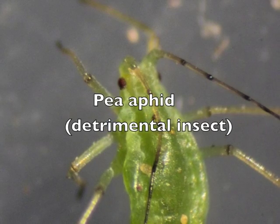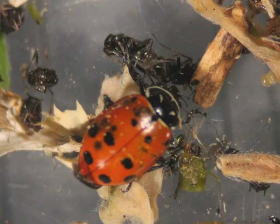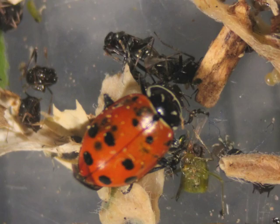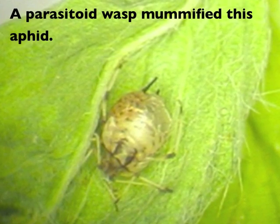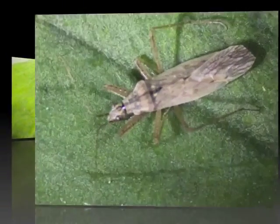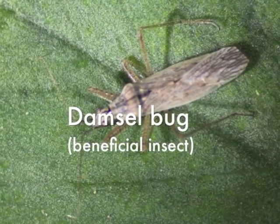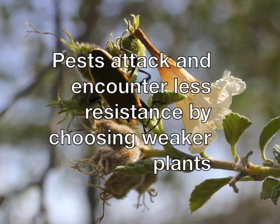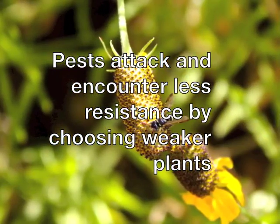There has to be a certain population of aphids to induce a ladybug to lay eggs. So when you get to a tipping point and there are suddenly too many aphids, that's about when the ladybugs show up and the little mantises come in — because there is something to eat and something for the offspring to eat. They help keep the balance.